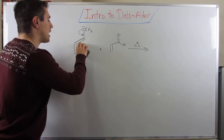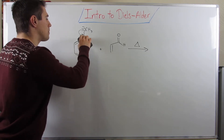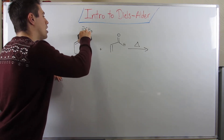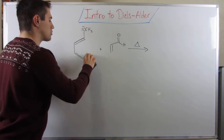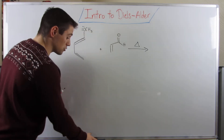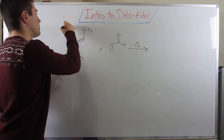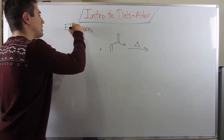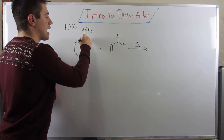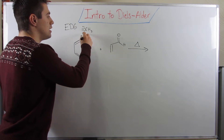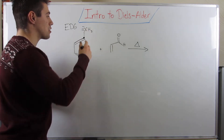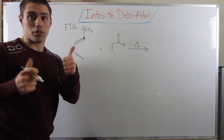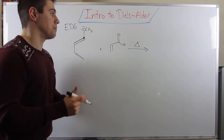Same deal with the dienophile. On electron-donating groups, you have to look at the atom directly attached to the system - if they have electrons and they're electronegative, that's an electron-donating group.